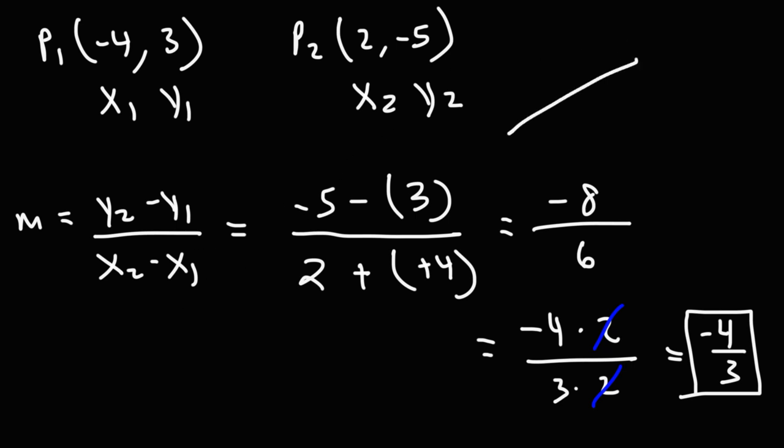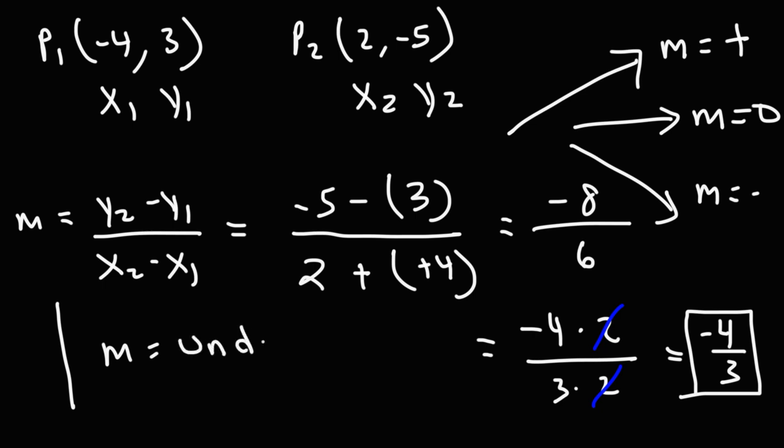Whenever you have a positive slope, the line is increasing. It's going up. When you have a negative slope, it's going down. For a horizontal line, the slope is 0. And for a vertical line, the slope is undefined. Whenever you have a 0 in the denominator of a fraction, the value of that fraction will be undefined.